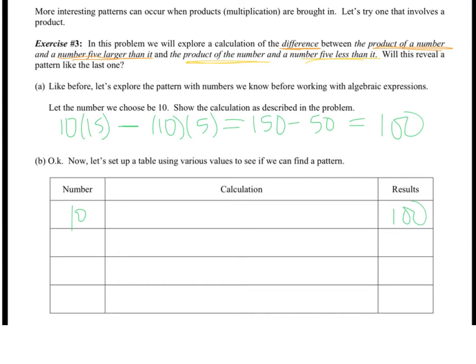Then we're going to look at 6. So if I take 6, and a number 5 more than that would be 11. Subtract 6. And a number that's 5 less than that is 1. So now I have 66 minus 6, which is 60.